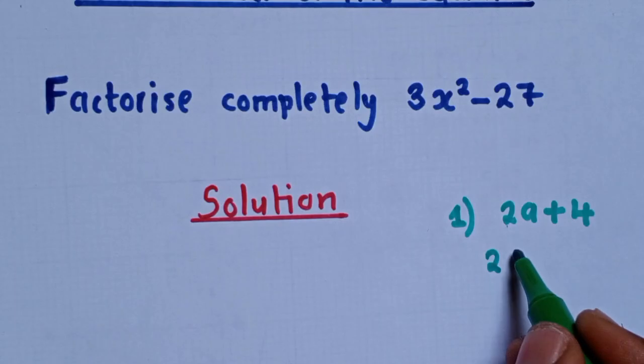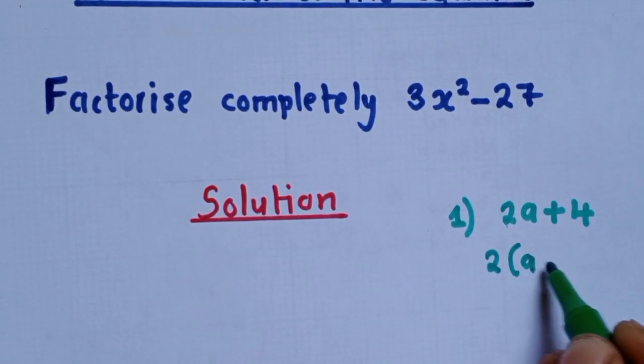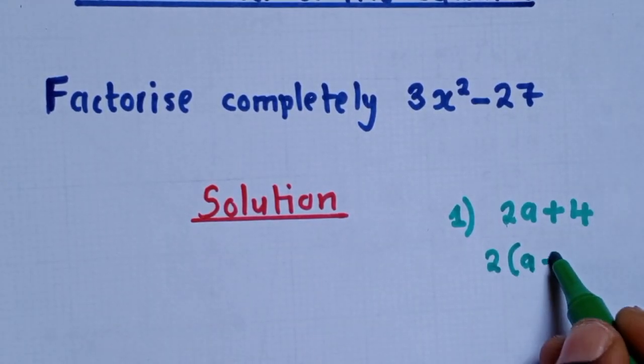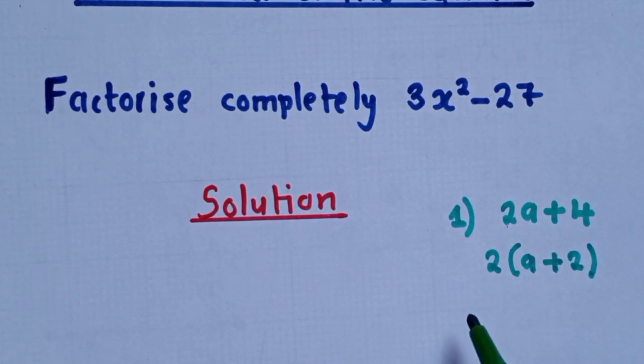So we write a 2. 2 into 2a, it will give us a. And then 2 into 4, it will give us 2. So that's it.